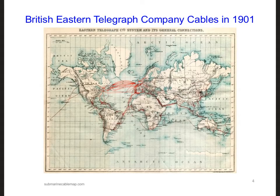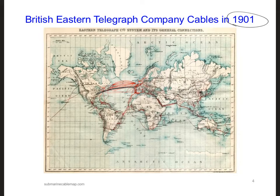The first successful telegraph connection between continents was installed across the Atlantic Ocean in the 1860s, using a long cable along the bottom of the ocean. Over the next several decades, more cables were installed around the world, as you can see in this map from 1901.